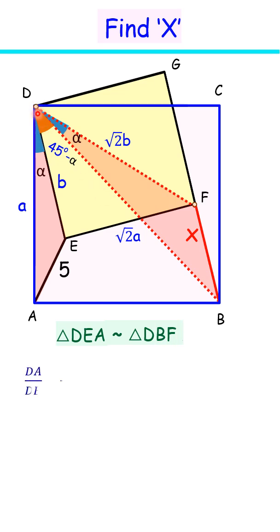That is DA upon DB is DE upon DF, which is nothing but 1 upon root 2, and the angle between them is same, so the triangles are similar.